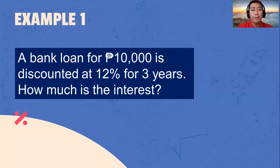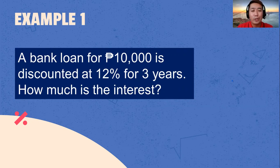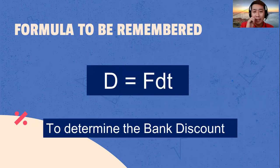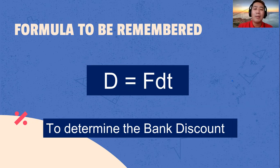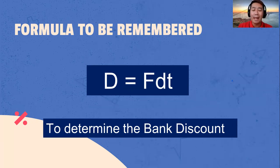Let's now try to solve the given example. A bank loan for 10,000 pesos is discounted at 12% for 3 years. Question: how much is the bank discount? Let's identify the formula to be used. Bank discount is equal to the maturity value multiplied by the discount rate and time. That is how to determine the bank discount.